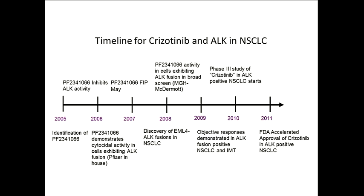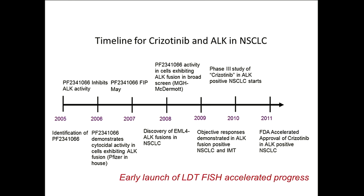The benefit is that if you do it right, you can go from the discovery of an alteration in 2007 to FDA approval in 2011. Other examples include the development of BRAF inhibitors and Gleevec, where you started with the genetic subtype and then did drug development on top. Bringing an LDT into the lab early actually accelerated the process — those early hits gave us the momentum to accrue the most patients.